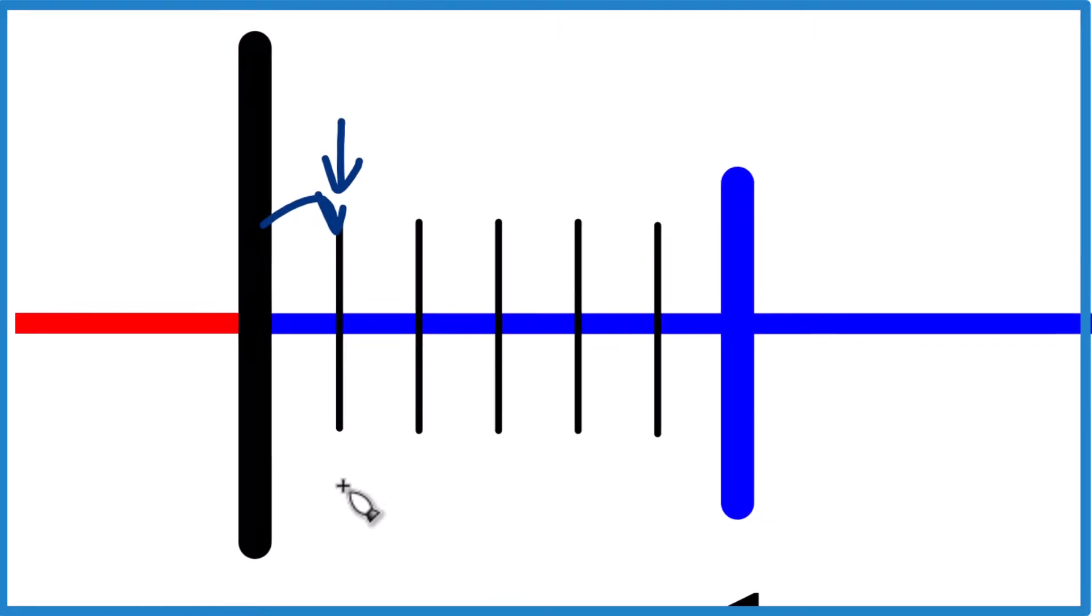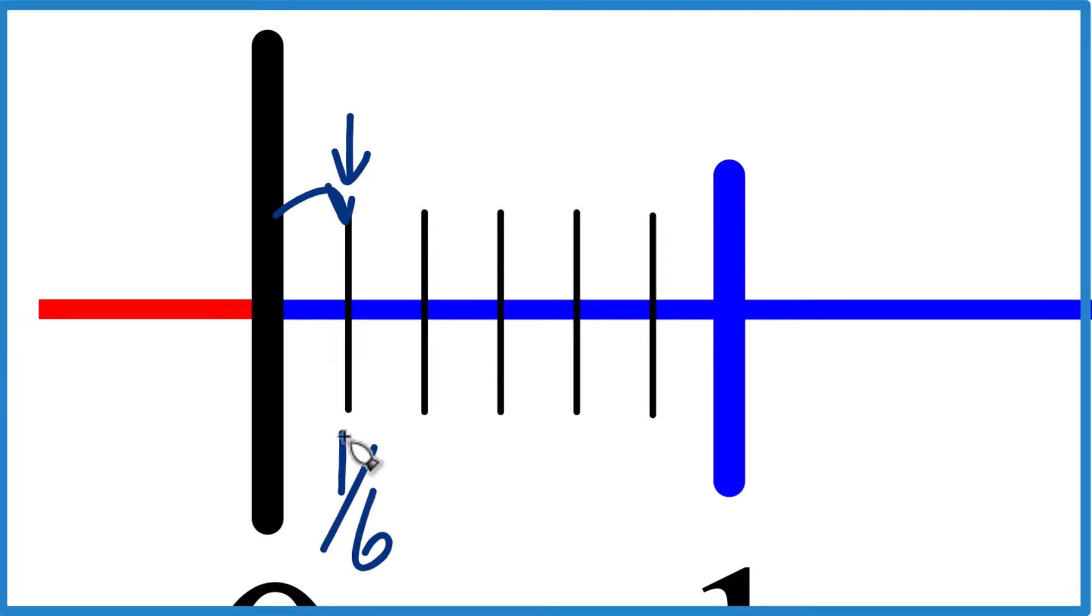This right here is where we find 1/6 on a number line. If you wanted to find, say, 4/6, you'd go 1, 2, 3, 4.